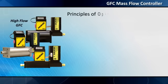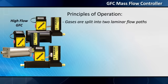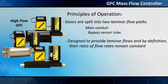Principles of operation: gases are split into two laminar flow paths — the main conduit and a bypass sensor tube. Both paths are designed to provide laminar flows and, by definition, their ratio of flow rates remains constant.